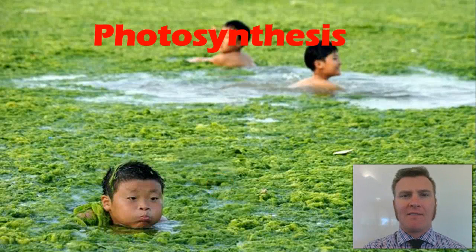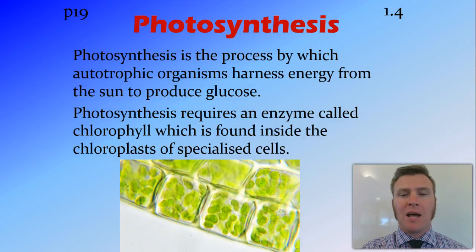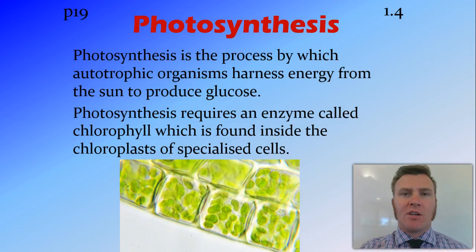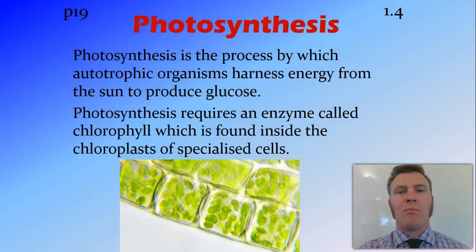In this video we're going to look at photosynthesis. Photosynthesis is a reaction that occurs in a part of the cells called the chloroplasts, and it occurs there because of the presence of an enzyme called chlorophyll, which is what gives plants their green pigment. The reason photosynthesis occurs is so that autotrophic organisms — organisms that produce their own energy — can harness energy from the Sun and therefore make glucose, so make food for themselves.